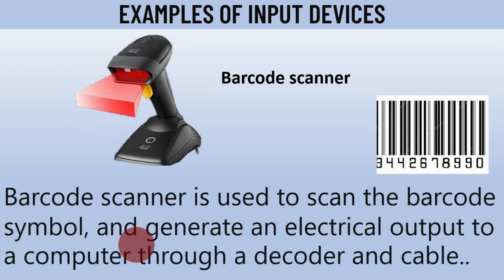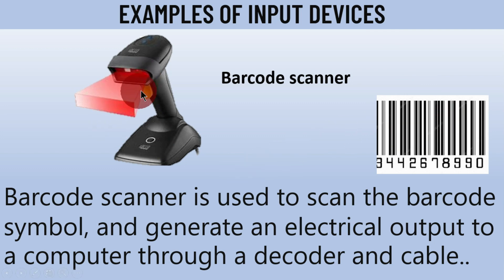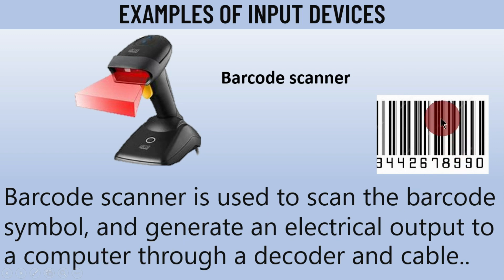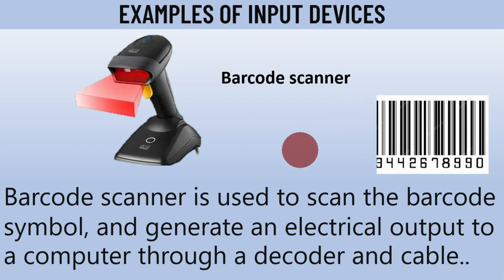The next example is the barcode scanner. Scanners are used to scan images into the computer system, and the barcode scanner specifically scans barcode symbols and generates an electrical output to a computer through a decoder and cable. When it is used to scan a barcode symbol, light rays emerge from the scanner and are directed at the barcode. It scans the black and white vertical lines and converts them into an electrical output to the computer, allowing identification of information encoded in the barcode.